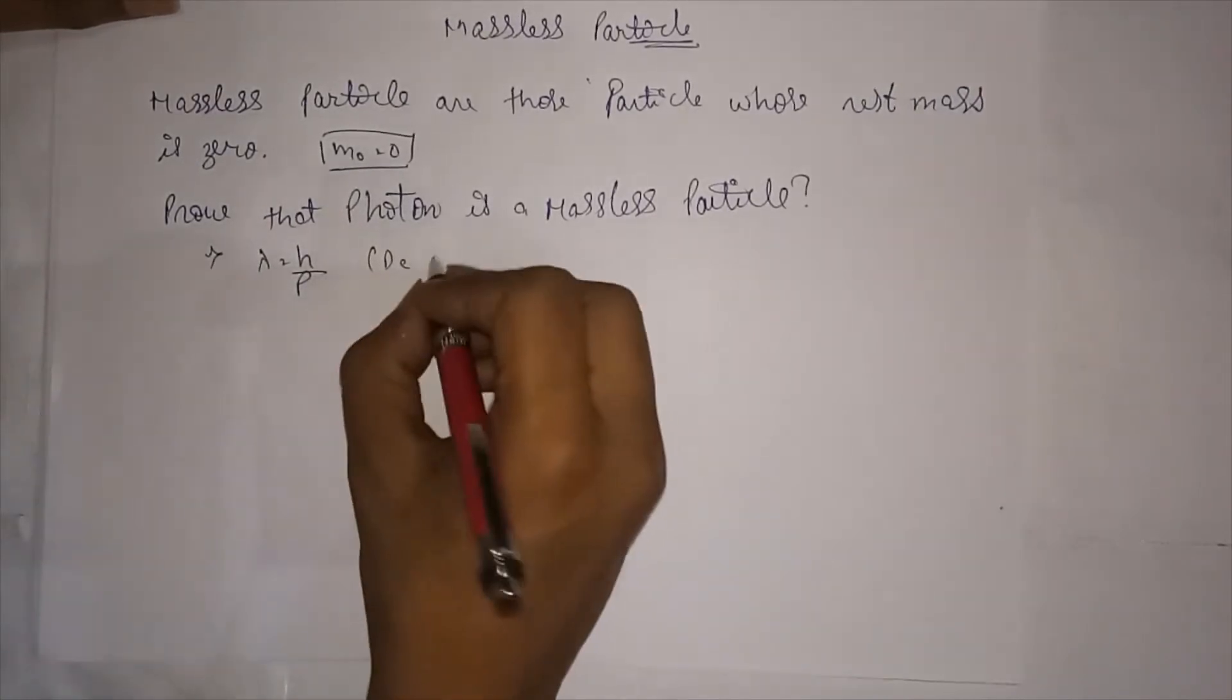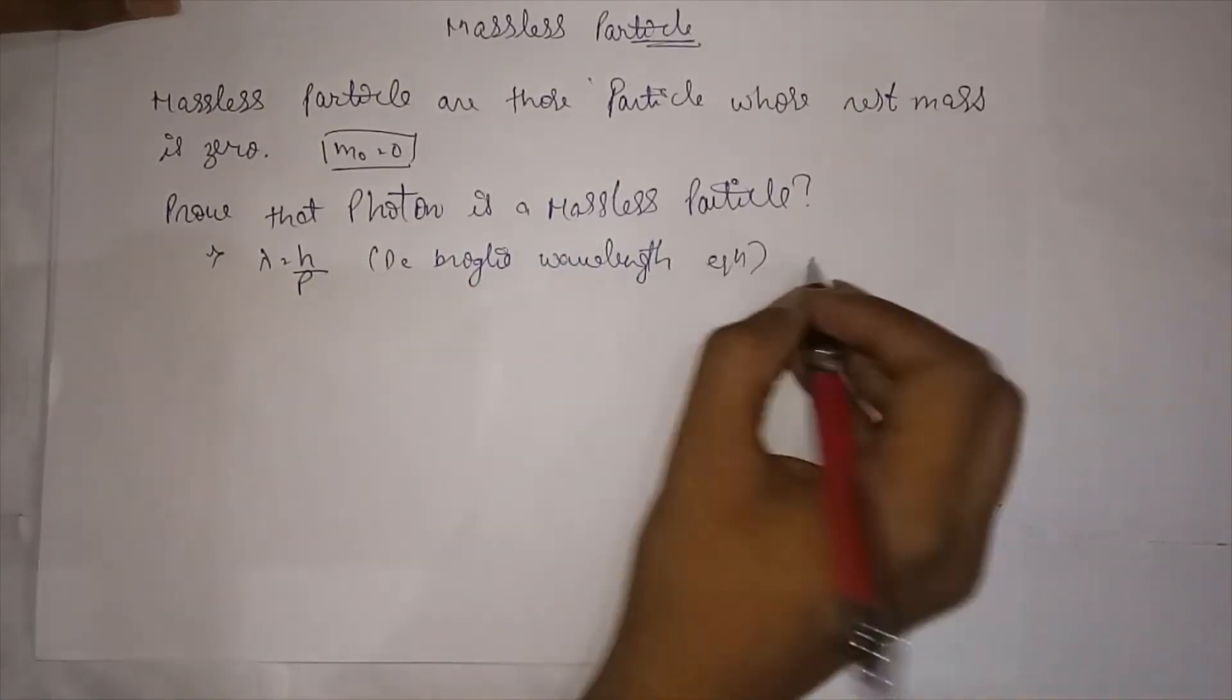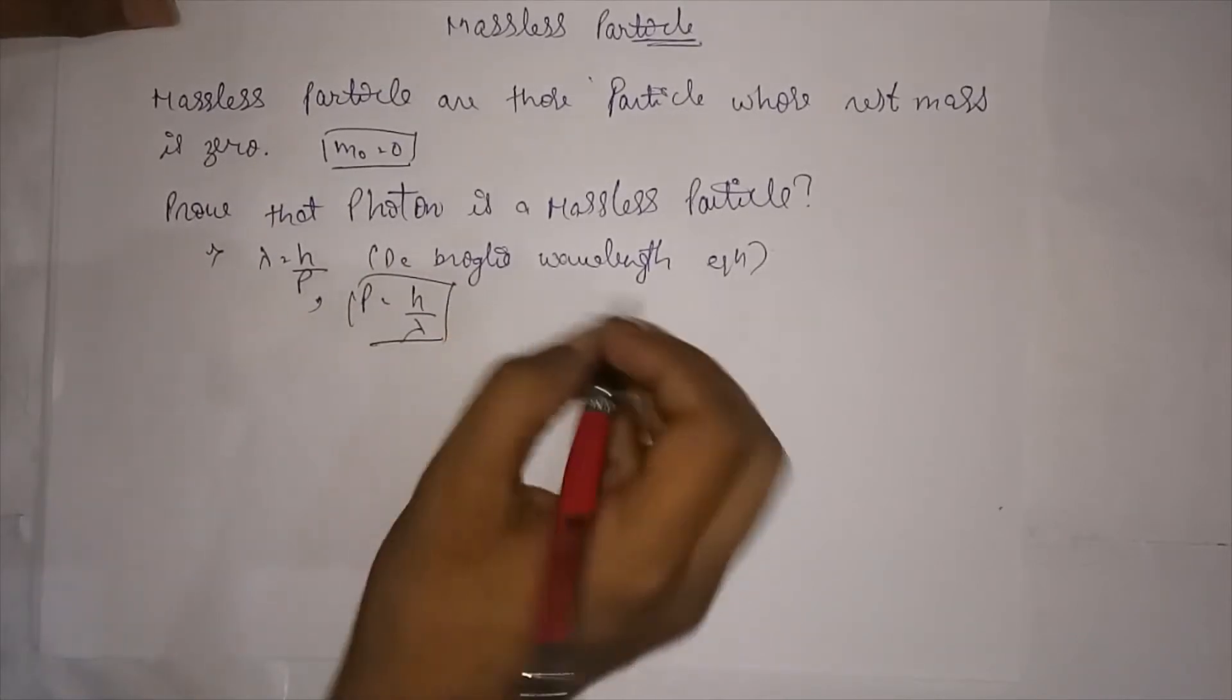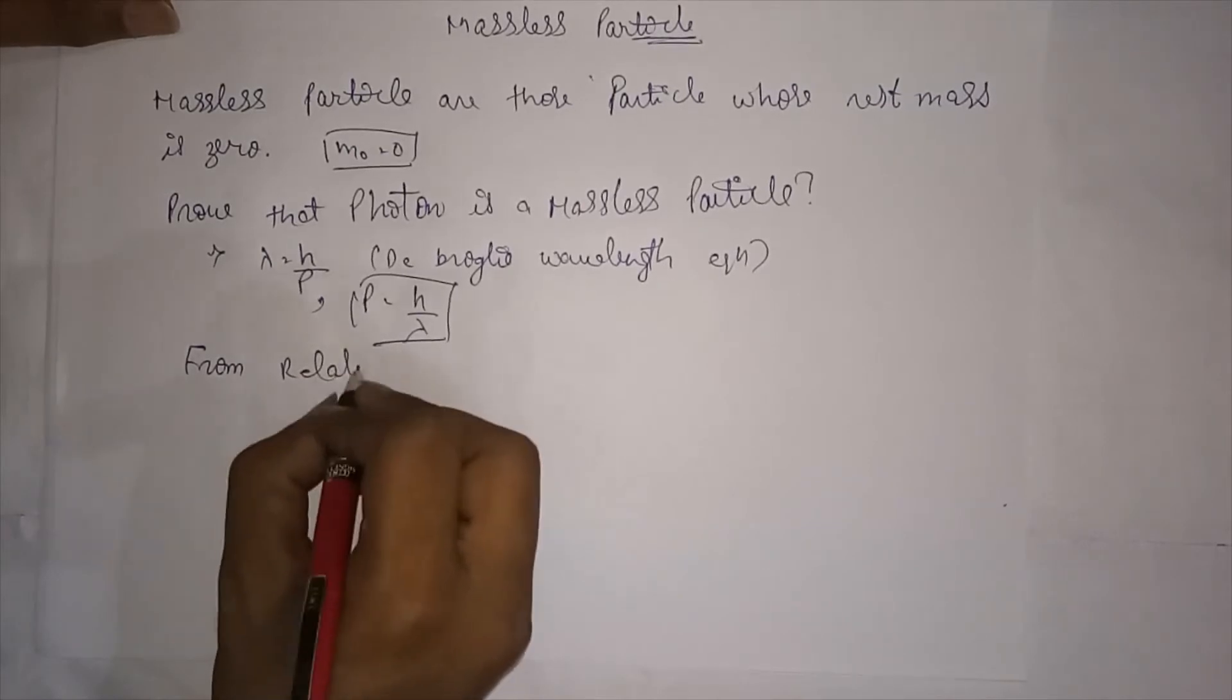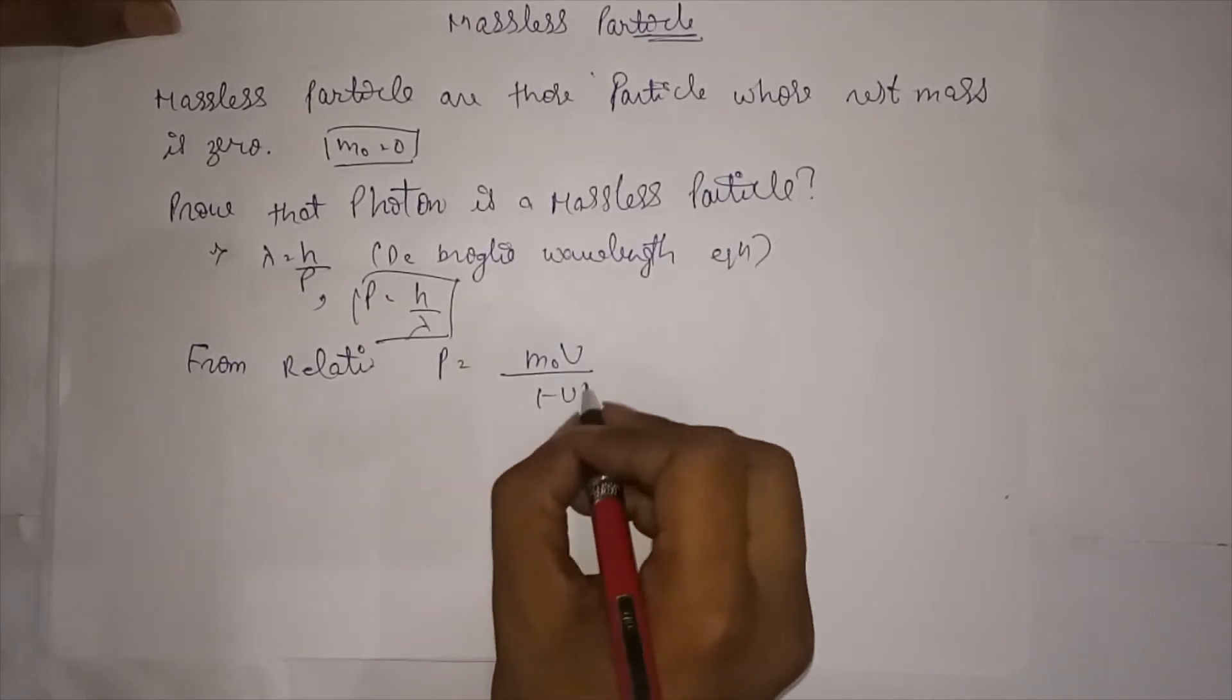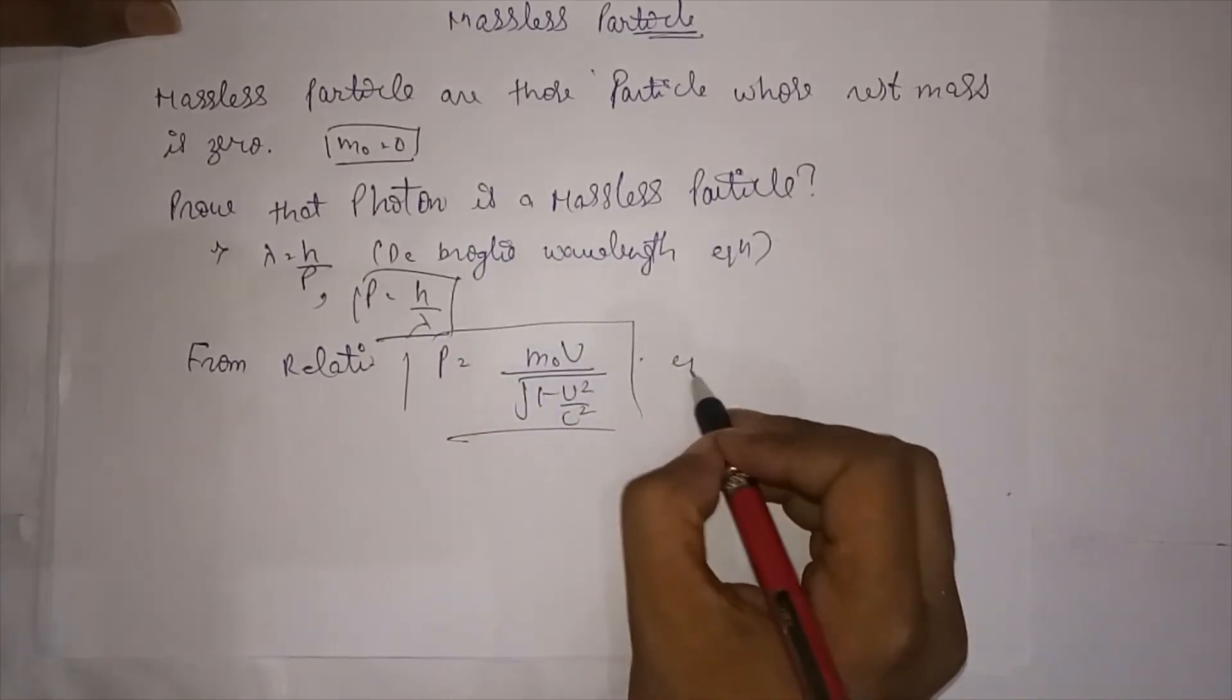Implies e equal to h upon lambda. And from relativity, our momentum is m0v upon under root 1 minus v square upon c square. Now putting the value of p in equation number one...